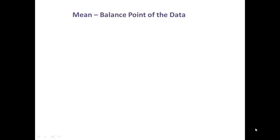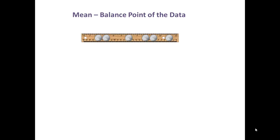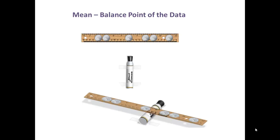Now we'll look at our first measure of center. The mean is a measure of center, and you can think of the mean as the balance point of the data. For example, in the ruler pictured, there are coins on the ruler. Suppose I wanted to balance the ruler on a marker — the place I would have to put the marker would be the balance point, and that would be at the mean of the data, as shown below.